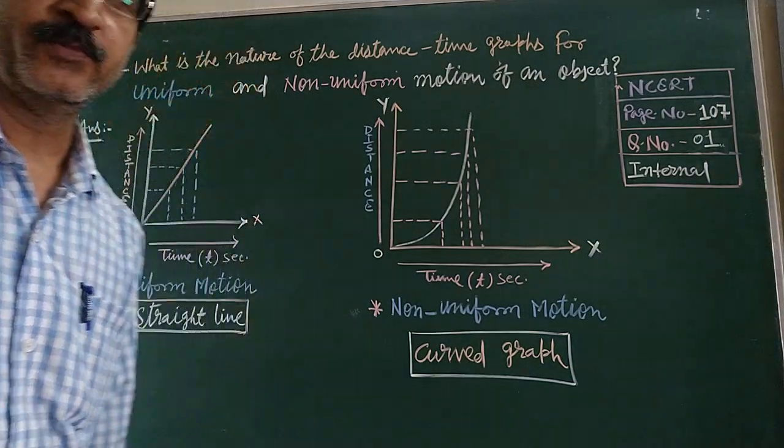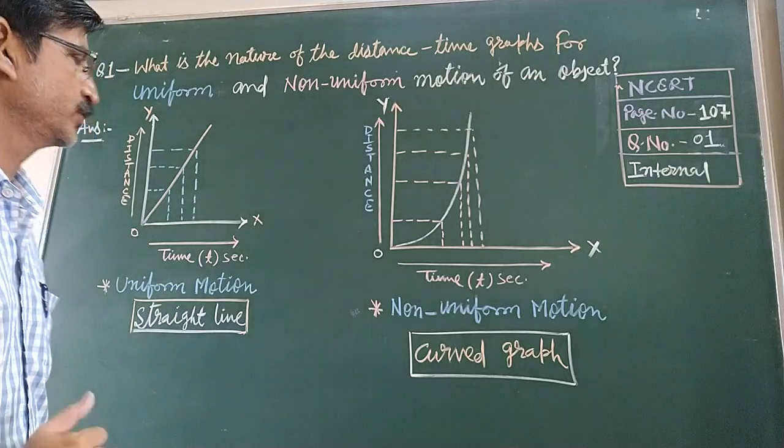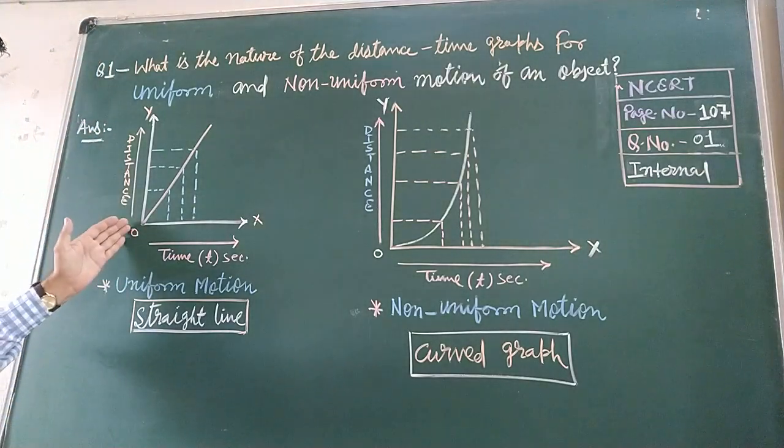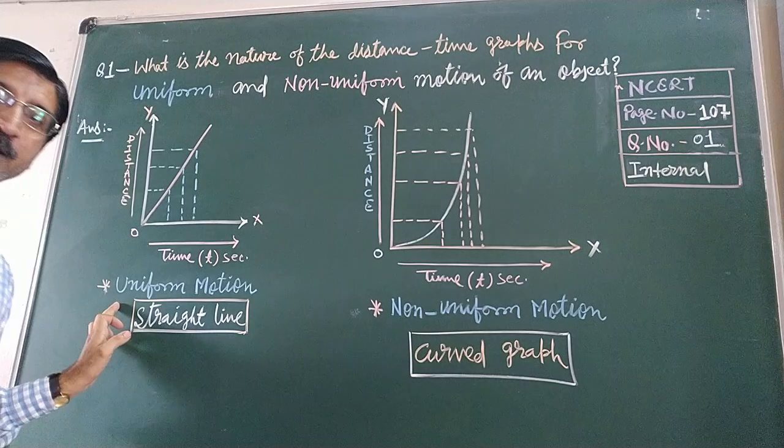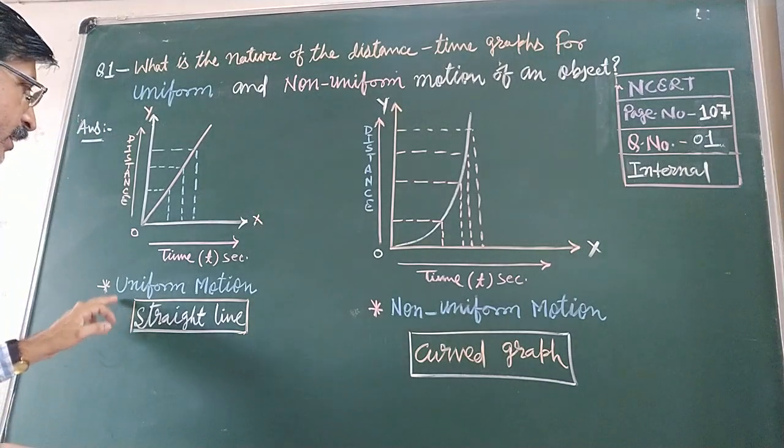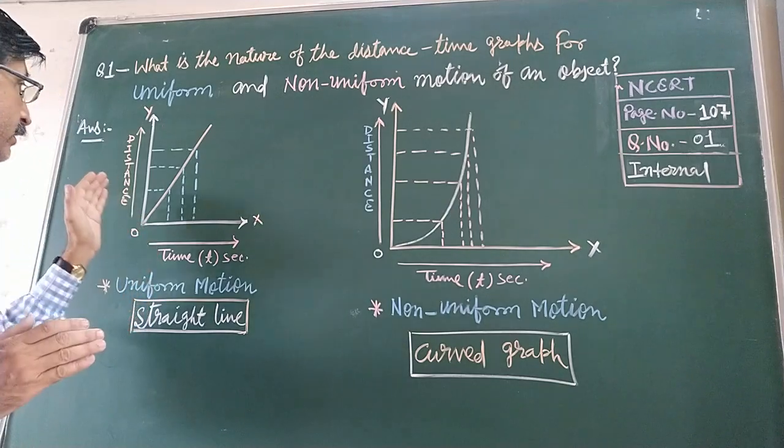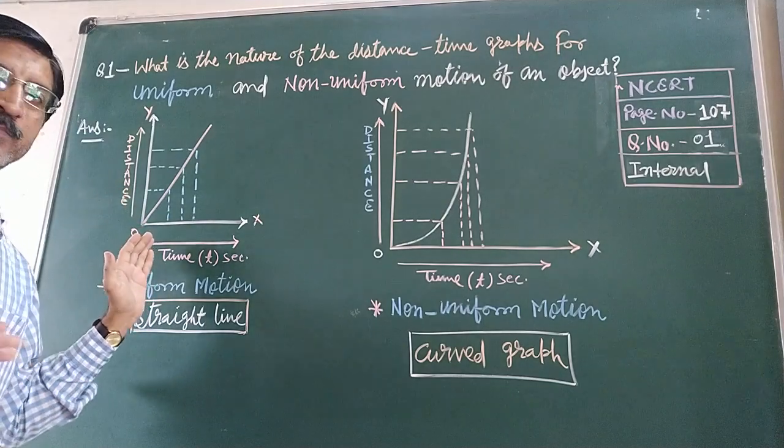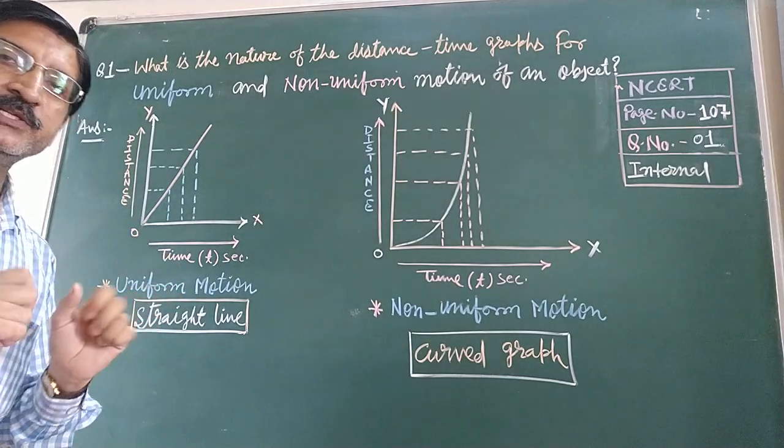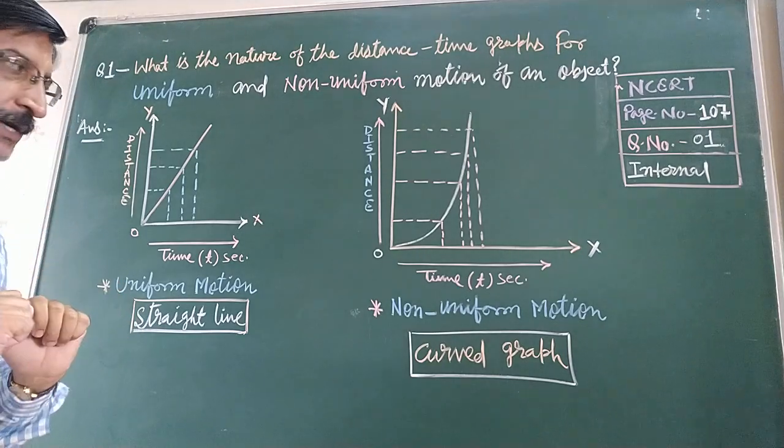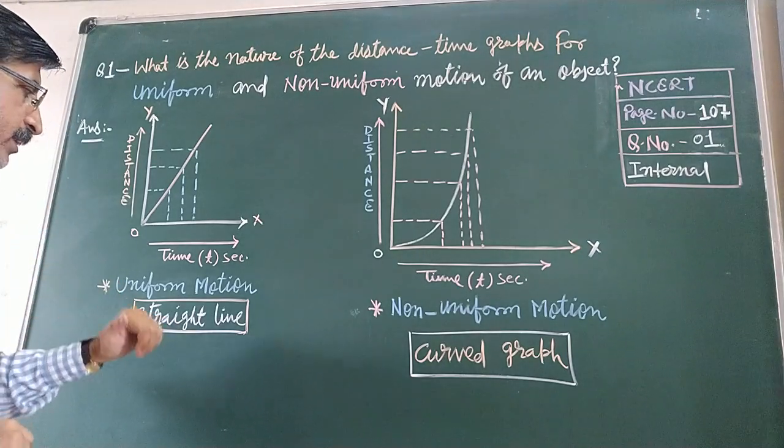So, for uniform motion and non-uniform motion, in uniform motion, the graph will be a straight line, which shows that distance and time is equal to one, so the velocity is constant. A straight line.